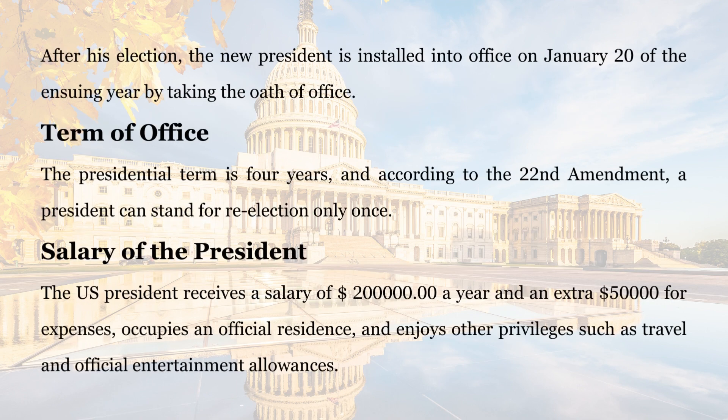Installation. After his election, the new president is installed into office on January 20th of the ensuing year by taking the oath of office. Term of Office. The presidential term is four years, and according to the 22nd Amendment, a president can stand for re-election only once.